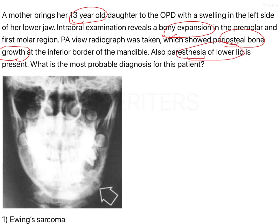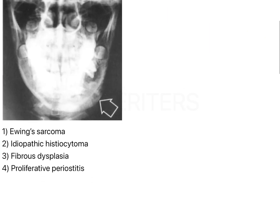If you have paresthesia of the lower lip as well as expansion of the lower border of the mandible where the periosteum is growing, that means the patient might either have had a trauma or there is a malignancy present. They have not mentioned any trauma, so that can be completely ruled out. Your answer is going to be some form of malignancy.